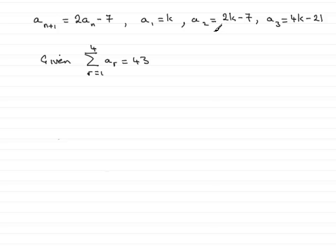And what I've done here is from parts a and b I've written down what the second term was, it was 2k minus 7, and in part b we had to find the third term which was 4k minus 21.